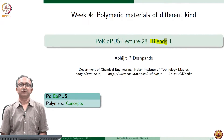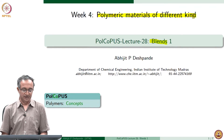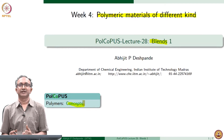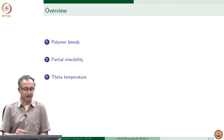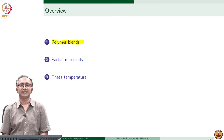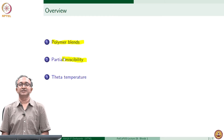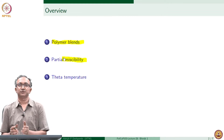Welcome to this lecture on polymeric blends. We are in week 4 where we are discussing polymeric materials of different kinds. We looked at copolymers, and we are going to look at blends and also composites. Today's lecture will first look at briefly what blends are and then look at the concept of partial miscibility. We will see that there are miscible blends and immiscible blends, as well as blends with a range of behavior from full miscibility to partial miscibility to immiscibility.